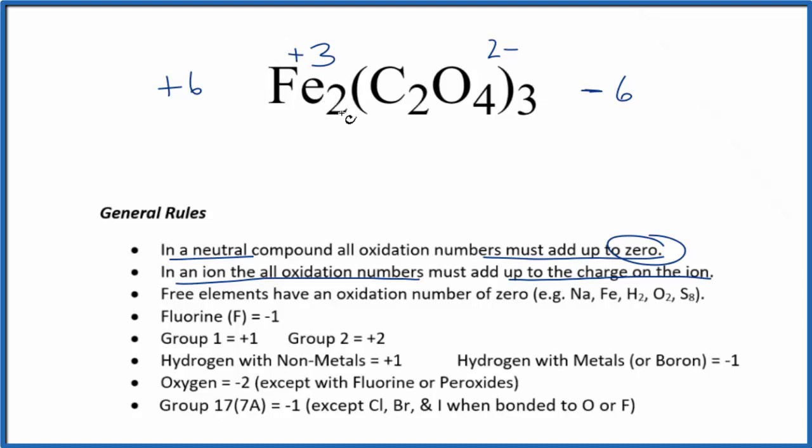So the oxidation number on each iron atom is going to be plus three. Just a word about the way we write the signs: this is the oxalate ion and its ionic charge is two minus. The minus comes after the charge. When we're dealing with oxidation numbers, the sign comes before the charge.